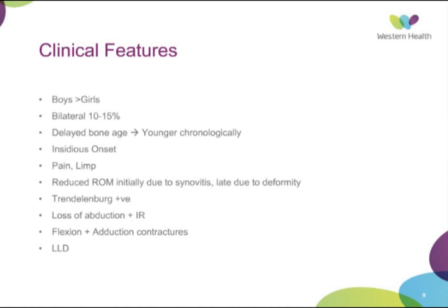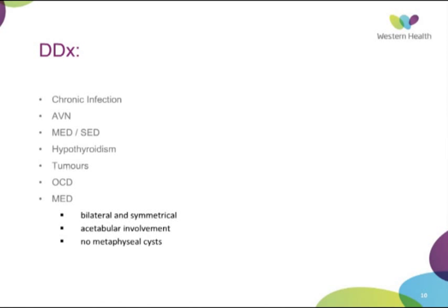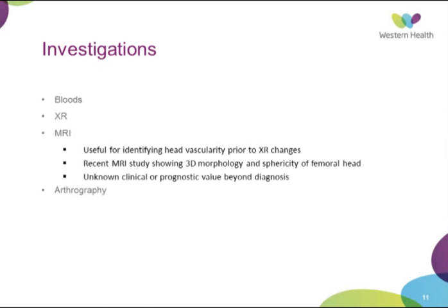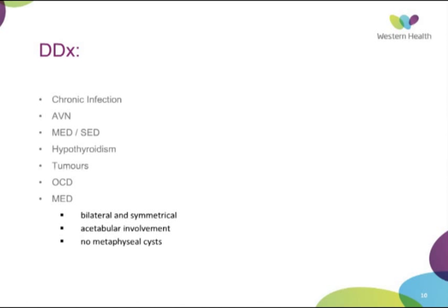Differentials when you see a child with a limp and you're thinking about Perthes: chronic infection — especially TB in populations from the Middle East and migrant populations — AVN, multiple epiphyseal dysplasia, spondyloepiphyseal dysplasia, hypothyroidism, tumors, and OCD. The major differential with MED is that MED is normally bilateral and symmetrical with acetabular involvement and metaphyseal cysts.